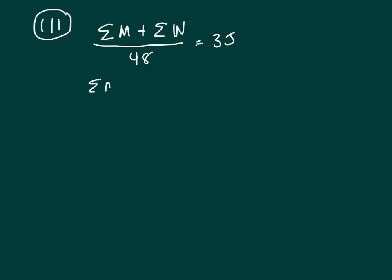So we have the sum of the men plus the sum of the women equals 35 times 48. I'm not going to multiply that out yet. Maybe I'll see a trick. Well, the problem is I've got two variables, sum of men and sum of women.